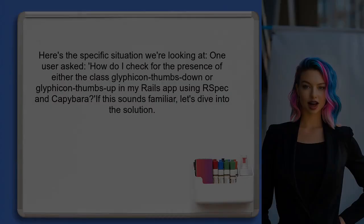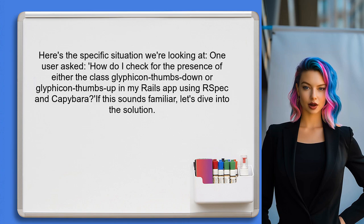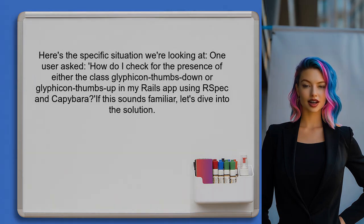Here's the specific situation we're looking at. One user asked: how do I check for the presence of either the class Glyphicon Thumbs Down or Glyphicon Thumbs Up in my Rails app using RSpec and Capybara? If this sounds familiar, let's dive into the solution.